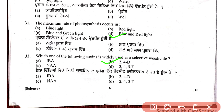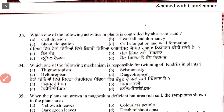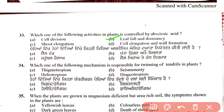Question 33: which activity in plants is controlled by abscisic acid? Options are cell division, leaf fall and dormancy, shoot elongation, and cell elongation and wall formation. The answer is leaf fall and dormancy — abscisic acid controls these activities. It also acts as an inhibitor among phytohormones.